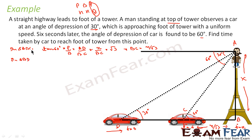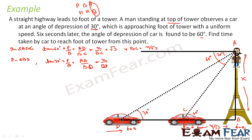Now, in the bigger triangle ABD, we have 30 degrees at D. Again using tan: tan 30° = AB/BD = x/BD. Since tan 30° = 1/√3, we get BD = x√3. These are our two equations: equation 1 gives BC = x/√3 and equation 2 gives BD = x√3.